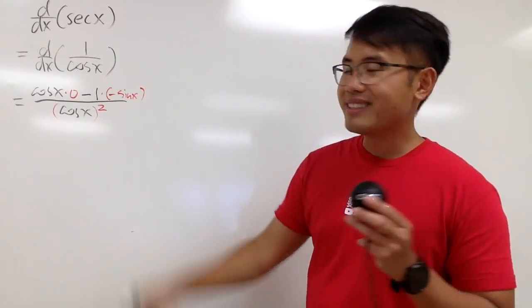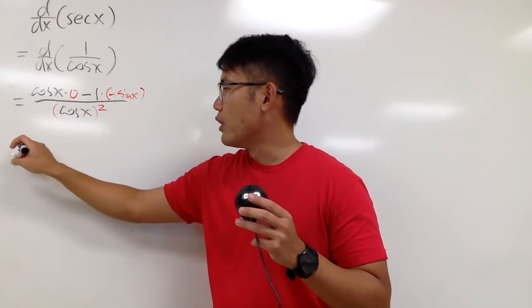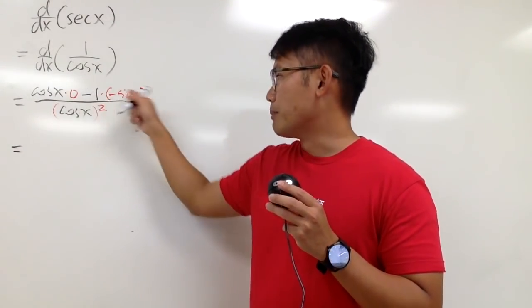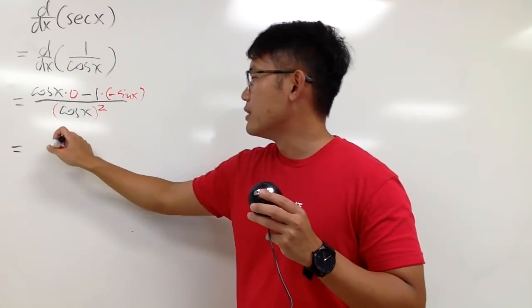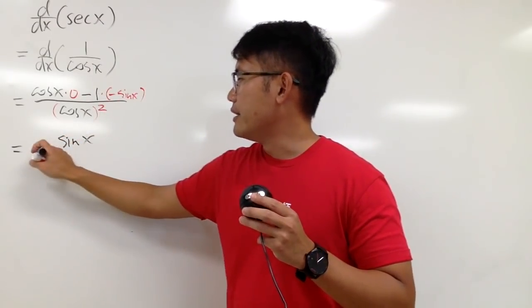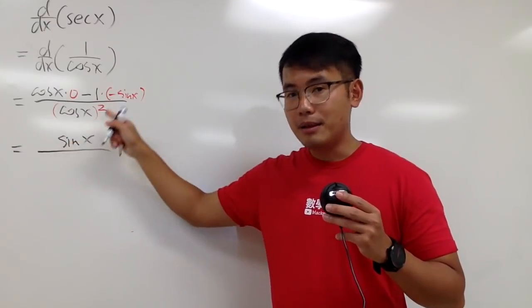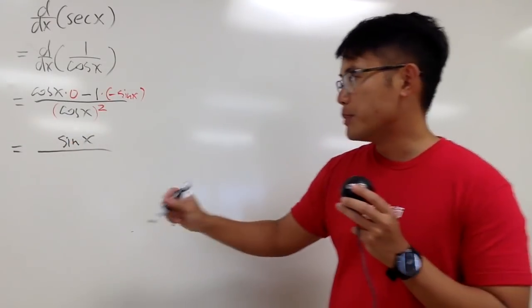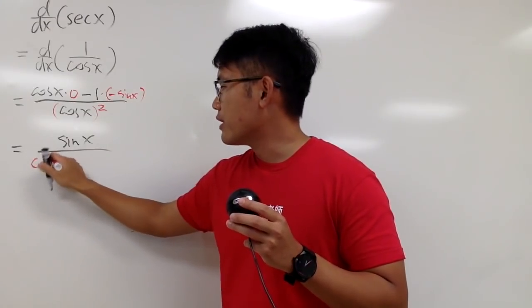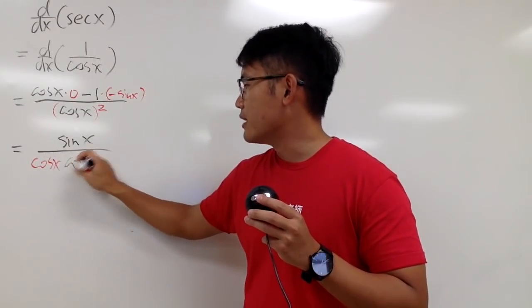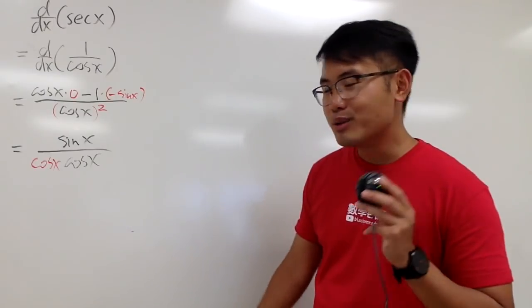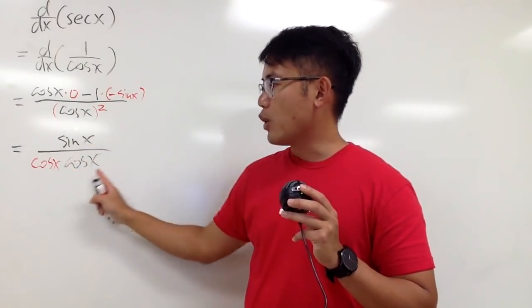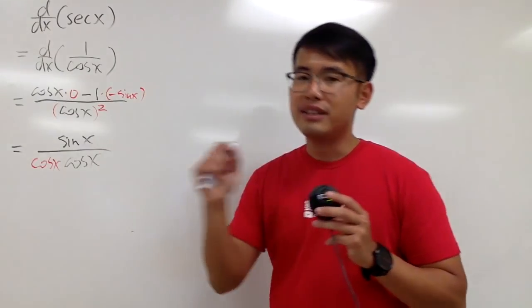And that's pretty much it. You see that this part is just 0, so on the top we just have a positive sine x after you multiply this out. And this is over cosine x squared, which means cosine x times cosine x. I can pair up the sine x on the top with this cosine x on the bottom to get tangent x.